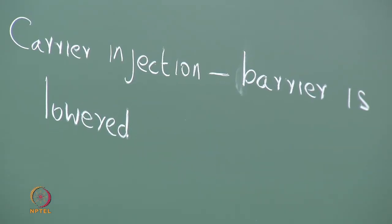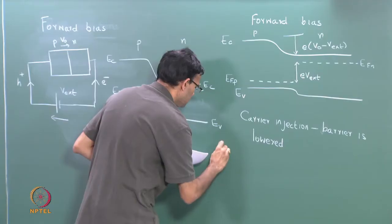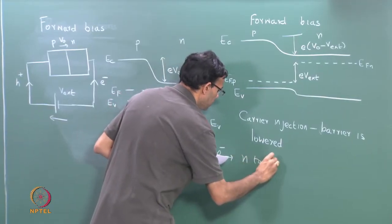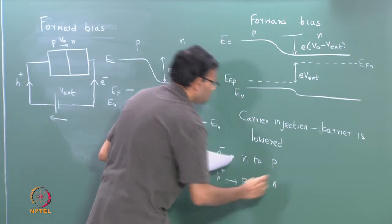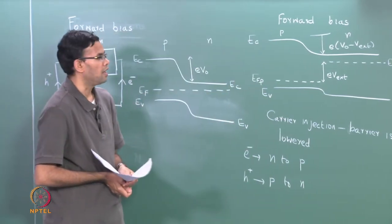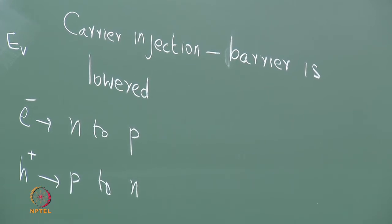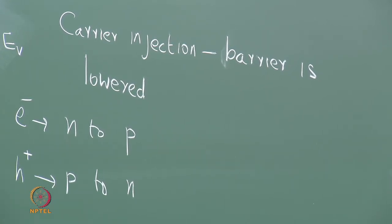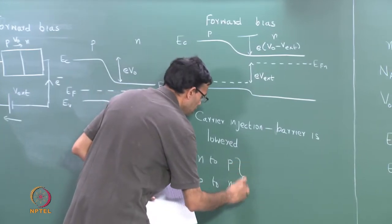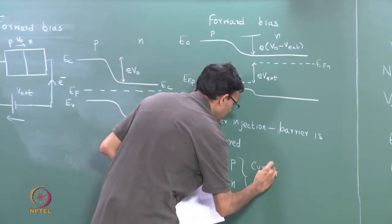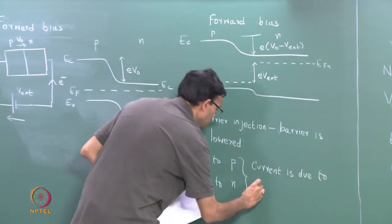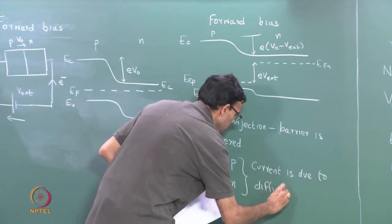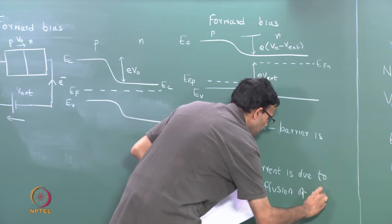This carrier injection means you have electrons going from n to p and holes going from p to n. These constitute the current in a p-n junction in forward bias. Electrons are the minority carriers on the p-side; holes are the minority carriers on the n-side. So current is due to the diffusion of minority carriers.